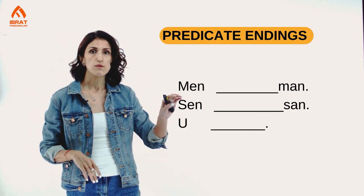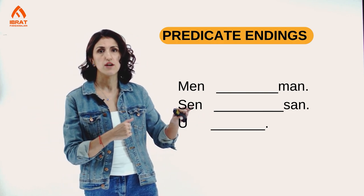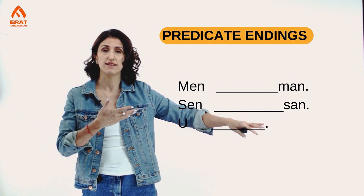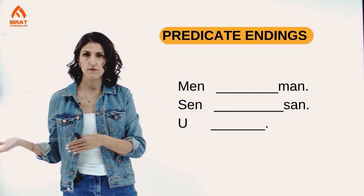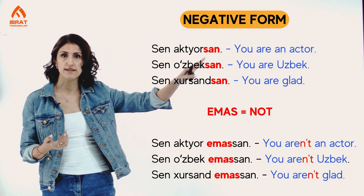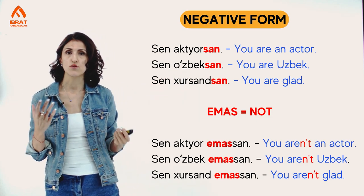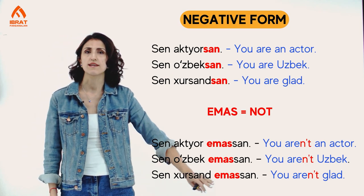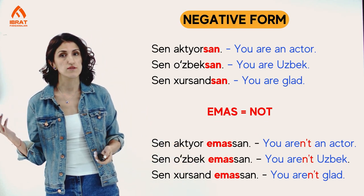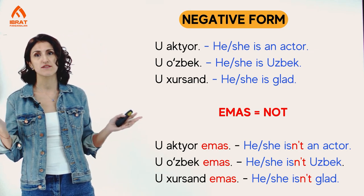Now let's do the same with 'you'. We have friendly you and respectful you. Sen and san — in dialect, sen can sound like san. Sen oktuche san or san oktuche san is the dialect form. Sen akhtooche san — you're an actor. Sen uzbek san — you're Uzbek. Sen khursant san — you're glad. Negative: sen khursant emas san, sen uzbek emas san, sen akhtooche emas san.